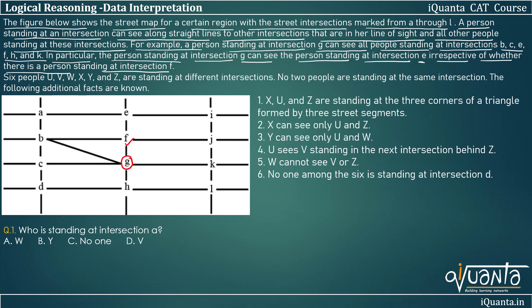G can see F because there is a street connecting G and F directly. G can also see C because there is a direct street between G and C. G can see H, K, and B as well. Apart from that, E is standing beyond F but there is still a straight line connecting G and E, so G can also see E. However, there is no direct straight line connecting G and J, so G cannot see J. Similarly, G cannot see I, A, D, or L. As another example, A can see B, C, D, E, and I — there are no more people A can see because there is no straight-line connection between A and other intersections.